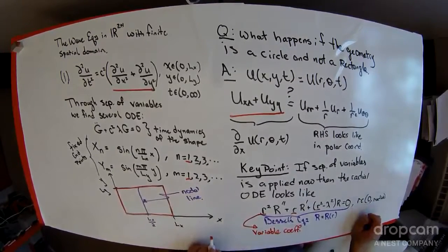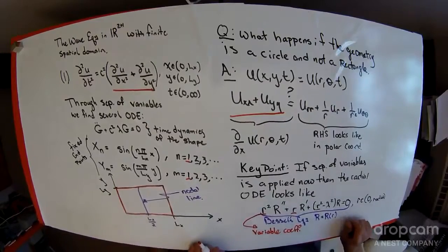What you might notice about Bessel's equation here is that these are variable coefficients, and since they are variable coefficients, exponential guessing will not work.